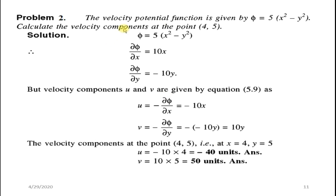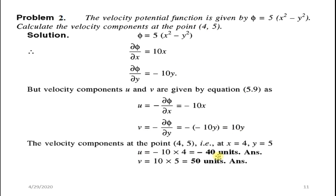Problem 2: The velocity potential function is φ = 5(x² − y²). Calculate the velocity components at point (4, 5). Find ∂φ/∂x = 10x and ∂φ/∂y = −10y. Therefore u = −10x and v = 10y. Substituting x = 4 and y = 5: u = −40 units and v = 50 units.